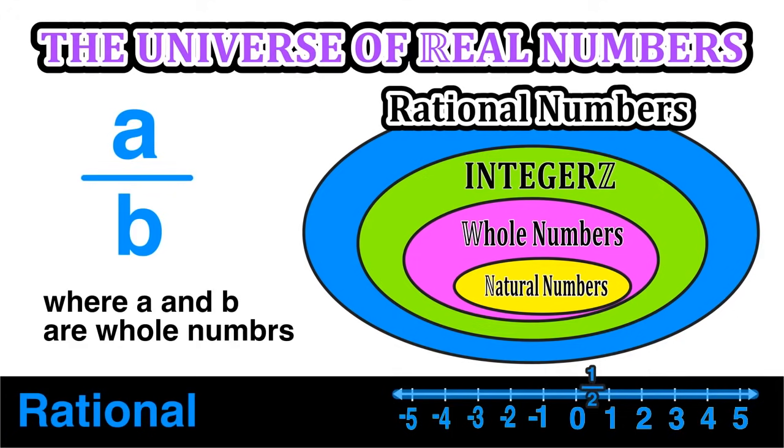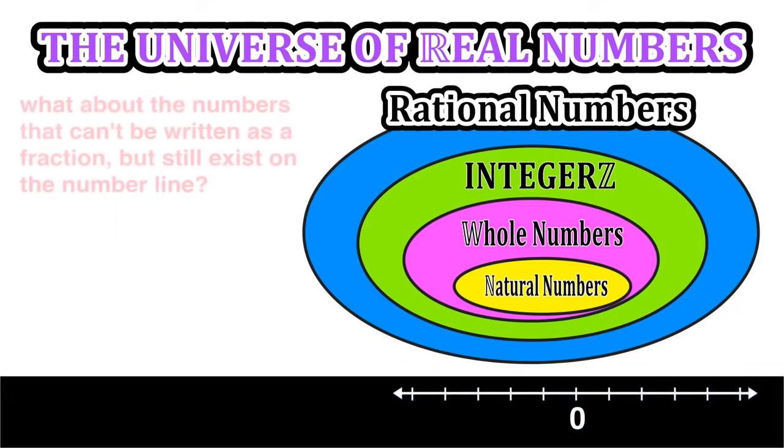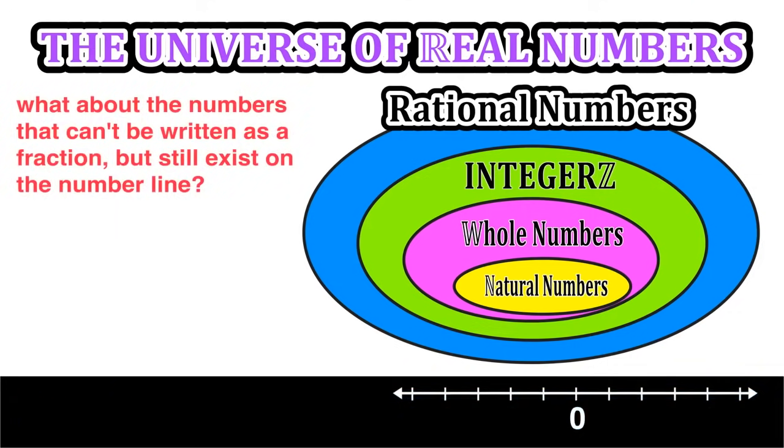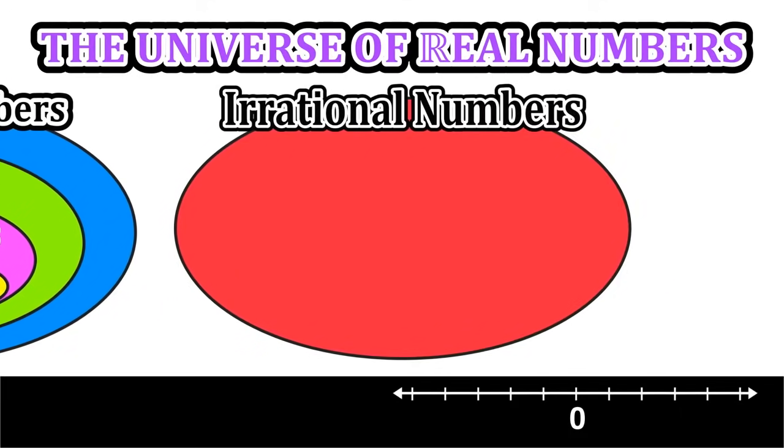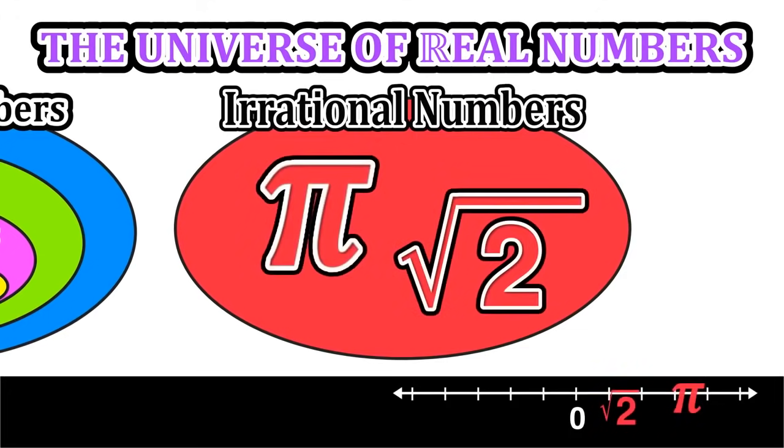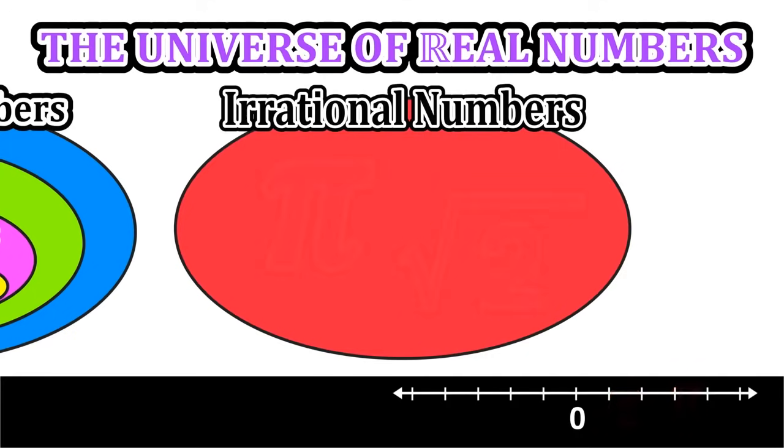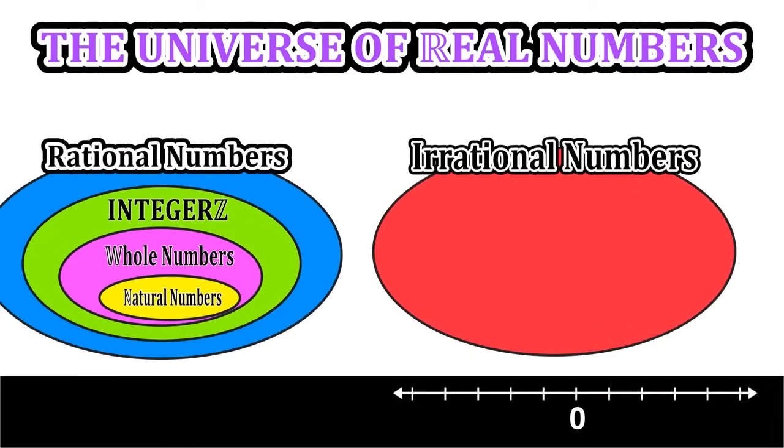Now this does not actually cover every possible value that can be found on the number line. We can ask ourselves, what about the numbers that can't be written as a fraction but still exist on that number line? This would be the set of irrational numbers, and examples would include pi and the square root of 2, since 2 is not a perfect square. Such irrational numbers do exist on the number line, however they cannot be written as a fraction the way that a rational number can be.